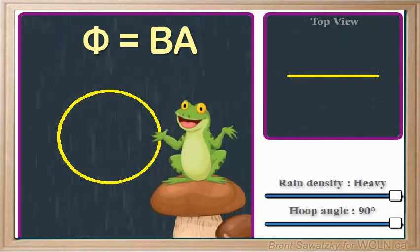If we go beyond zero, the rain starts entering the loop in the opposite direction from where we started. This is a flux in the opposite direction. The magnetic field is effectively going backwards through the loop, as compared to our starting situation.